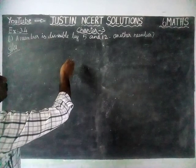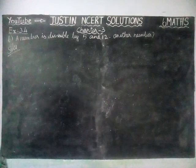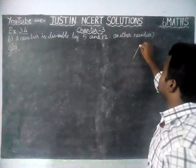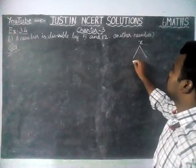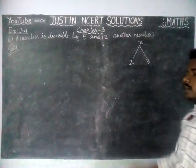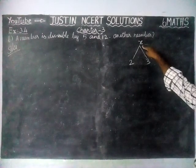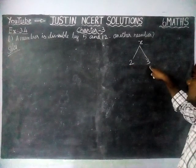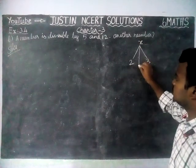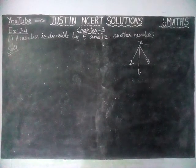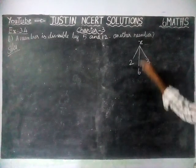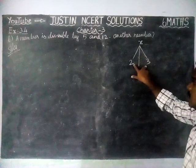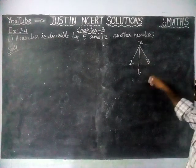We are going to apply the divisibility rule. In the divisibility rule, if a number is divisible by both 2 and 3, we apply the divisibility rule of 6. If a number is divisible by 2 and 3, then that number is always divisible by 6, because 2 and 3 are factors of 6.